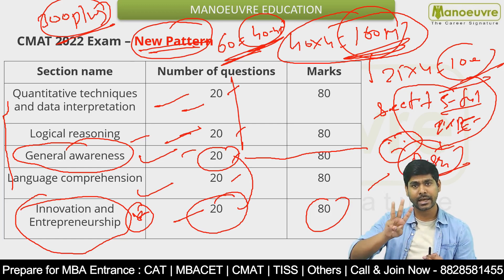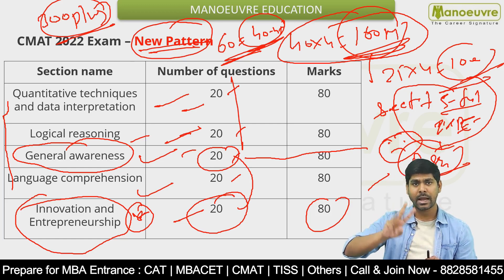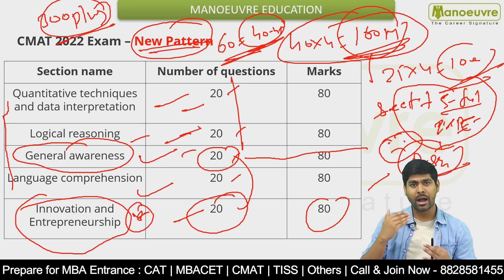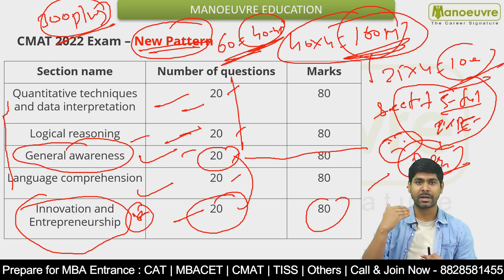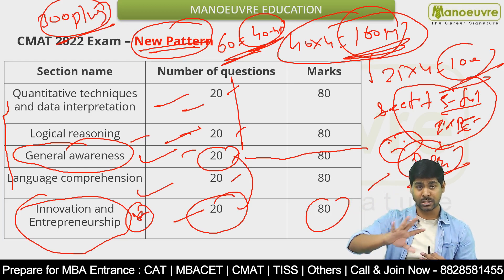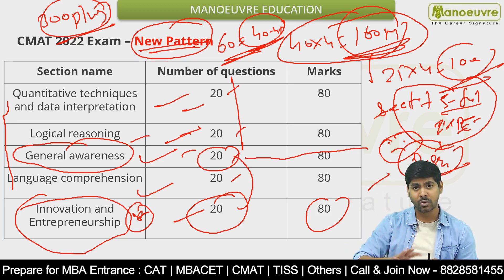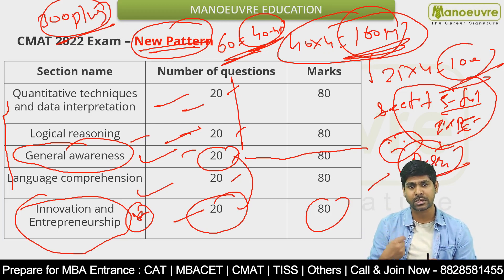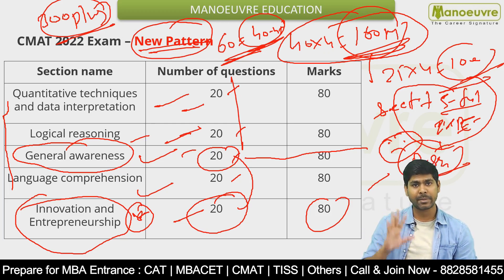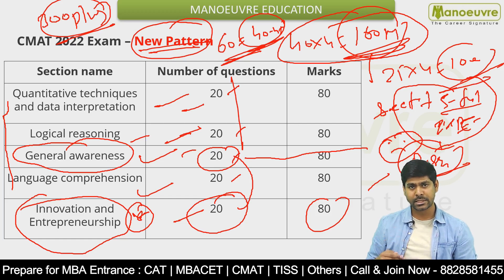These three areas — English, Maths and Logic — let's do these thoroughly, because here you can maximize your score, especially in Logic. In English there will also be a good score, and Maths score improves with practice. But GK is an all-time game changer.